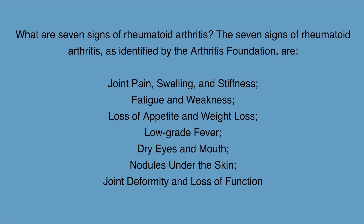What are the 7 Signs of Rheumatoid Arthritis? As identified by the Arthritis Foundation, they are: joint pain, swelling, and stiffness; fatigue and weakness; loss of appetite and weight loss; low-grade fever; dry eyes and mouth; nodules under the skin; and joint deformity and loss of function.